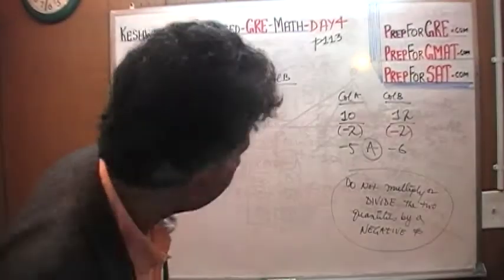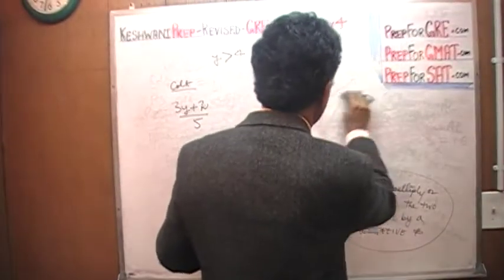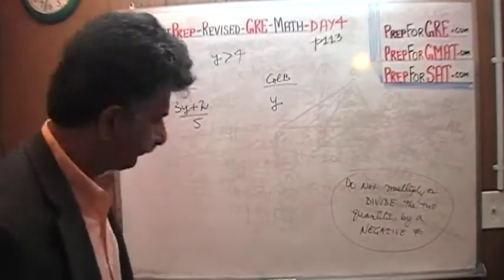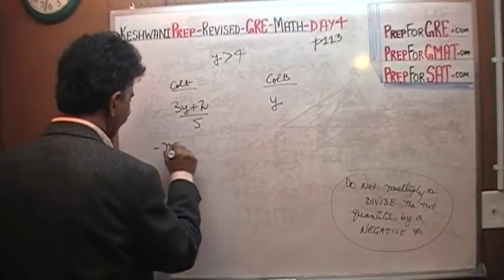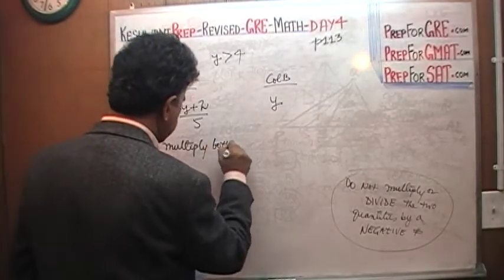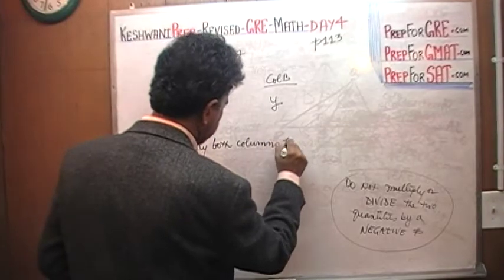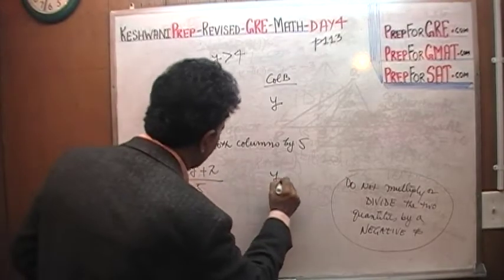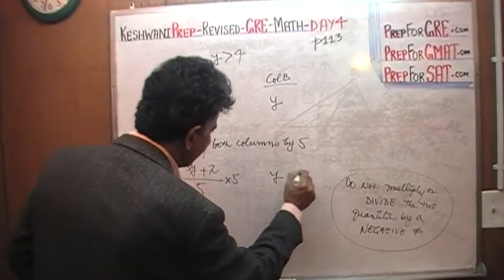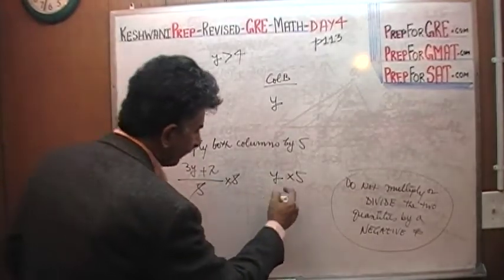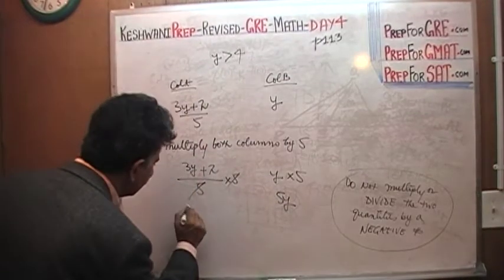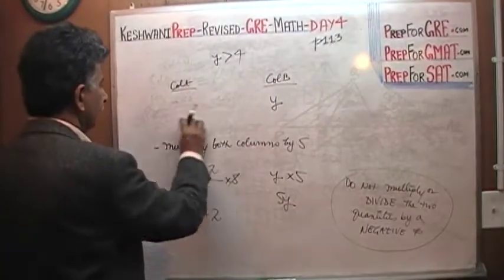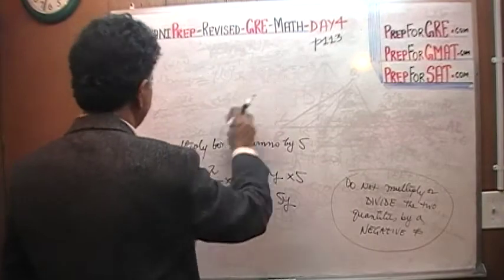So that's what we're going to do here — multiply both columns by 5. Since we're multiplying by a positive number, we can do that. Step 1: multiply both columns by 5. We have 3Y plus 2 over 5 versus Y. Multiply both columns by 5: the 5 drops out, giving us 3Y plus 2 on the left and 5Y on the right.